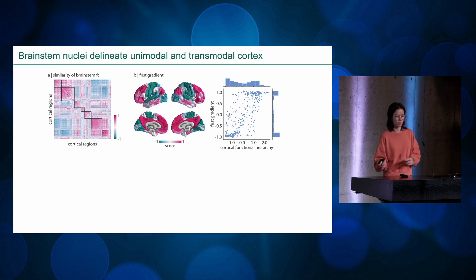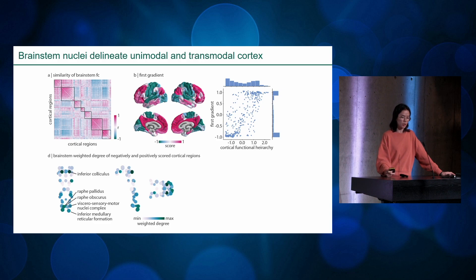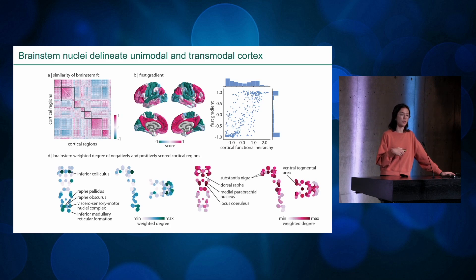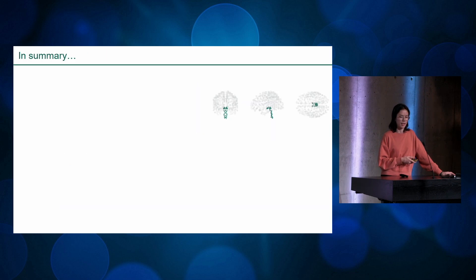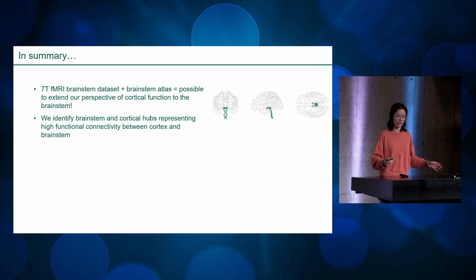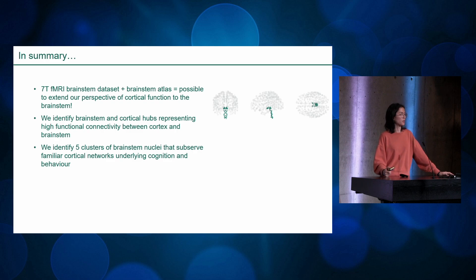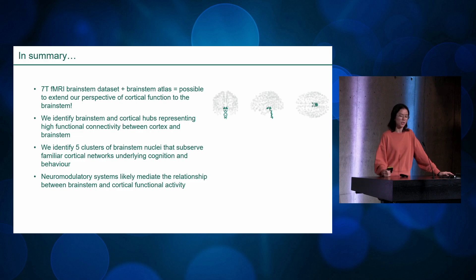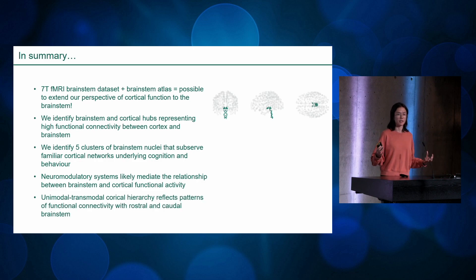The question then is: for unimodal versus transmodal brain regions, where in the brainstem are they connected? Unimodal regions are mostly connected to caudal brainstem regions plus the inferior colliculus, while transmodal regions are mostly connected to rostral brainstem minus the inferior colliculus. In summary, using this amazing brainstem dataset, we can extend our perspective of cortical function to the brainstem, identify high-connectivity hubs, find clusters of brainstem nuclei subserving familiar cortical patterns, and show that neuromodulatory systems are likely mediating the cortex-brainstem relationship.